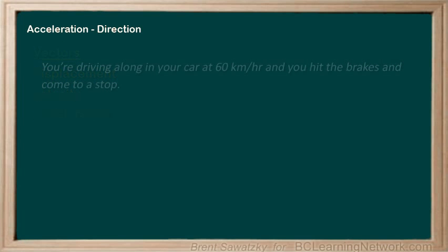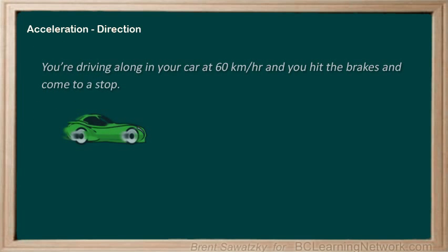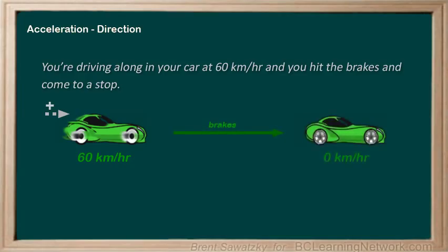For example, if you're driving along in your car at 60 km/hr, let's say this is the positive direction, then you hit the brakes and you come to a stop. So, during the stop, your displacement is in the positive direction, which means that your velocity is also in the positive direction.